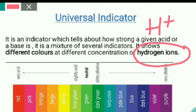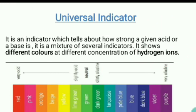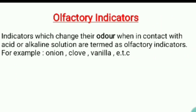So if you use the universal indicator and put it in a solution and the solution shows a certain color, you can conclude — for example, if the pH reads 12, that shows it is a base.